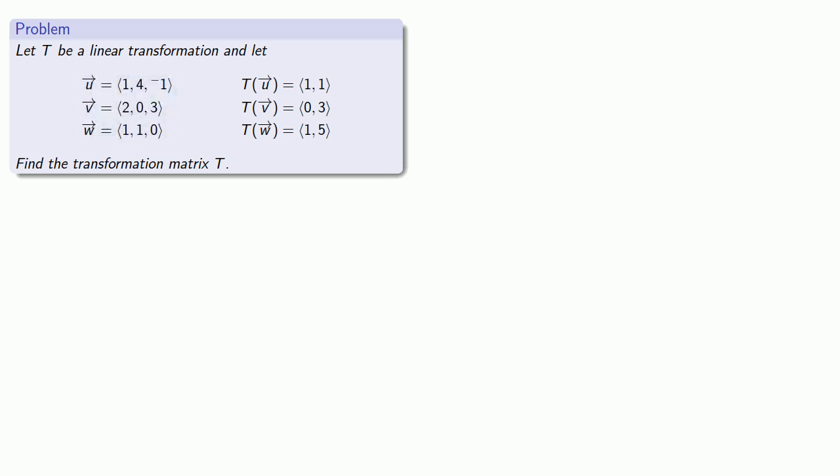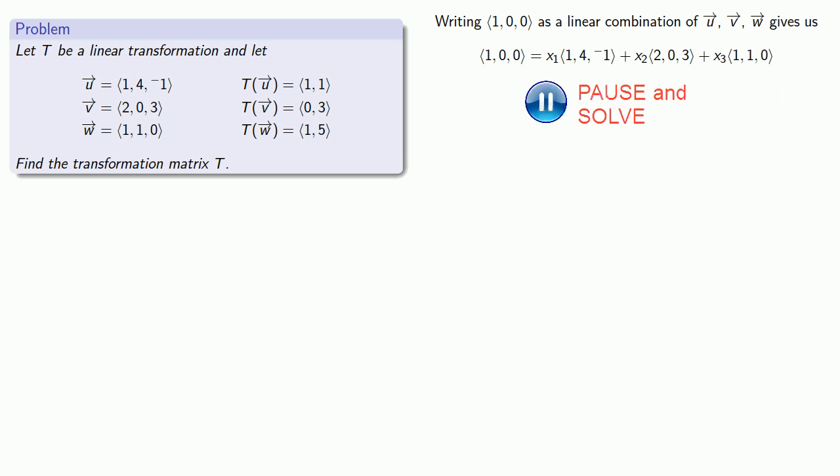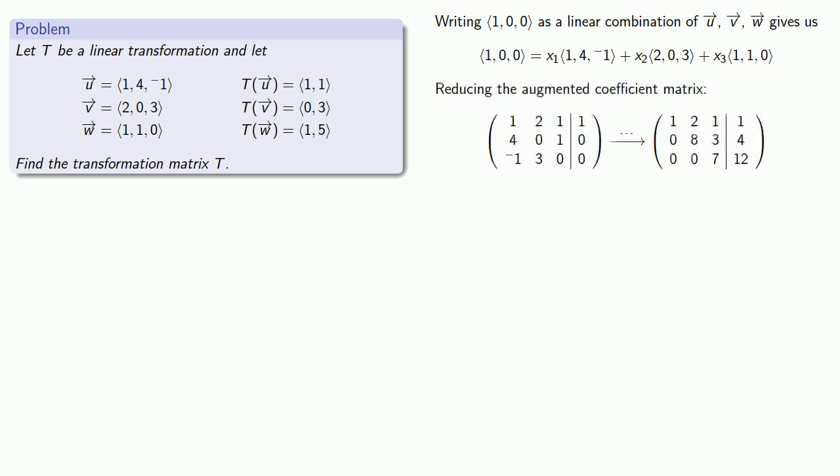So we want to express (1, 0, 0) as a linear combination of U, V, and W, which will give us this vector equation. And we can reduce the augmented coefficient matrix. And that gives us our solutions. And so we can express (1, 0, 0) as a linear combination of U, V, and W.